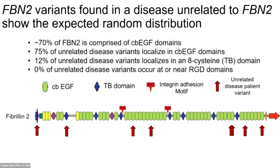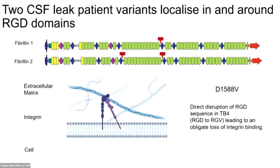We were especially interested in the fact that two out of the seven unique variants lay in or around RGD domains, particularly because one variant directly disrupts one of the RGD residues, which we'd predict leads to an obligate loss of integrin binding. The arginine-glycine-aspartate motif is the canonical binding motif of integrins, which are one of the major receptors allowing cells to bind to the extracellular matrix and are responsible for a myriad of cell signaling events affecting cell state.